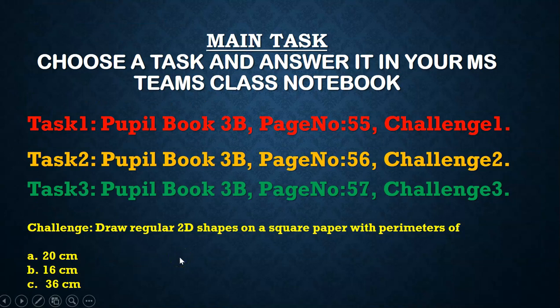Now for our main task. Choose a task that you can do best and answer it in your MS Teams class notebook. You all have your pupil book 3B. And you can answer task 1, challenge 1 on page 55. Task 2, the challenge 2. And task 3, challenge 3.